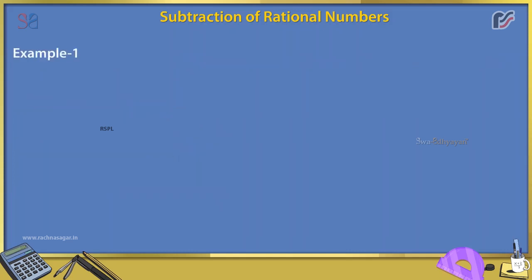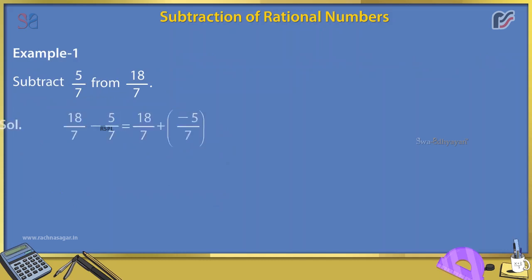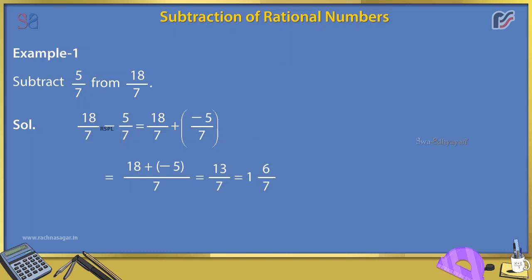Example 1: Subtract 5/7 from 18/7. Solution: 18/7 - 5/7 = 18/7 + (-5/7) = (18 + (-5))/7 = 13/7 = 1 and 6/7.